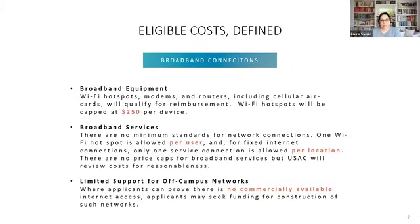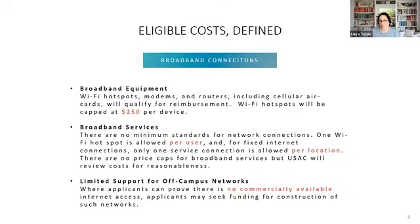For broadband services, there is no minimum standard set for up and down speeds. One Wi-Fi hotspot is allowed per user, and for fixed internet connections purchased at the home, one service connection is allowed per location or address. There are no price caps for broadband services, but USAC will review costs for reasonableness. Reasonableness has not been specifically defined by the FCC beyond the caps, so use best judgment and document why you chose what you chose.